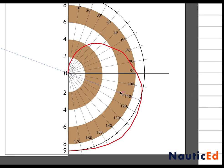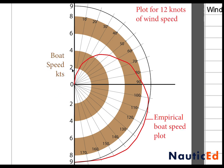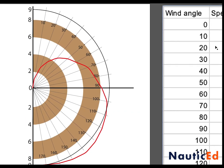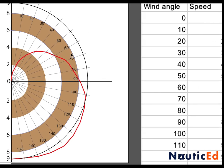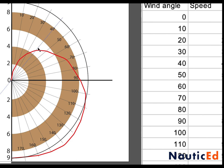Let's zoom in on the polar plot. The concentric circles represent speed — this inner circle is 4 knots, this one is 8, and this one is 9. If you're sailing at 40 degrees off the wind — this angle here — at 12 knots of wind, your boat should be going right about 4.4 to 4.6 knots, which matches our data of 4.6.